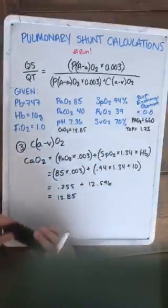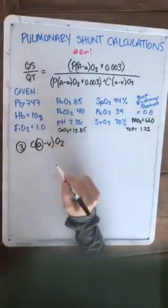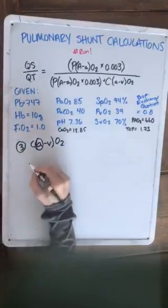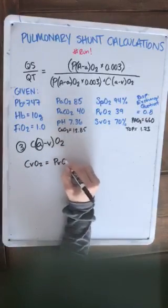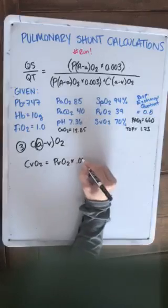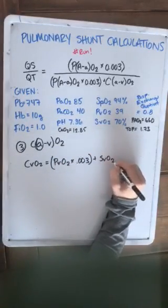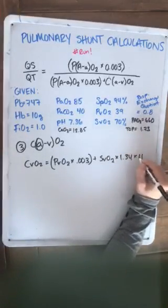So we're still on step 3. We just calculated our CaO2. Now we're going to calculate our CVO2. CVO2 is your PVO2 times 0.003, it's a like equation, plus SVO2 times 1.34 times our hemoglobin.